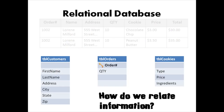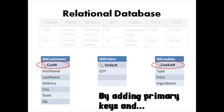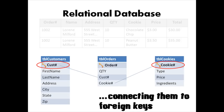But now, how are we going to relate information in these tables? As of right now, they have nothing in common to relate. Well, that's where primary keys and foreign keys come into play. If we add primary keys to every table and then add those fields to our orders table — in other words, create foreign keys — then we'll be able to relate those tables together.